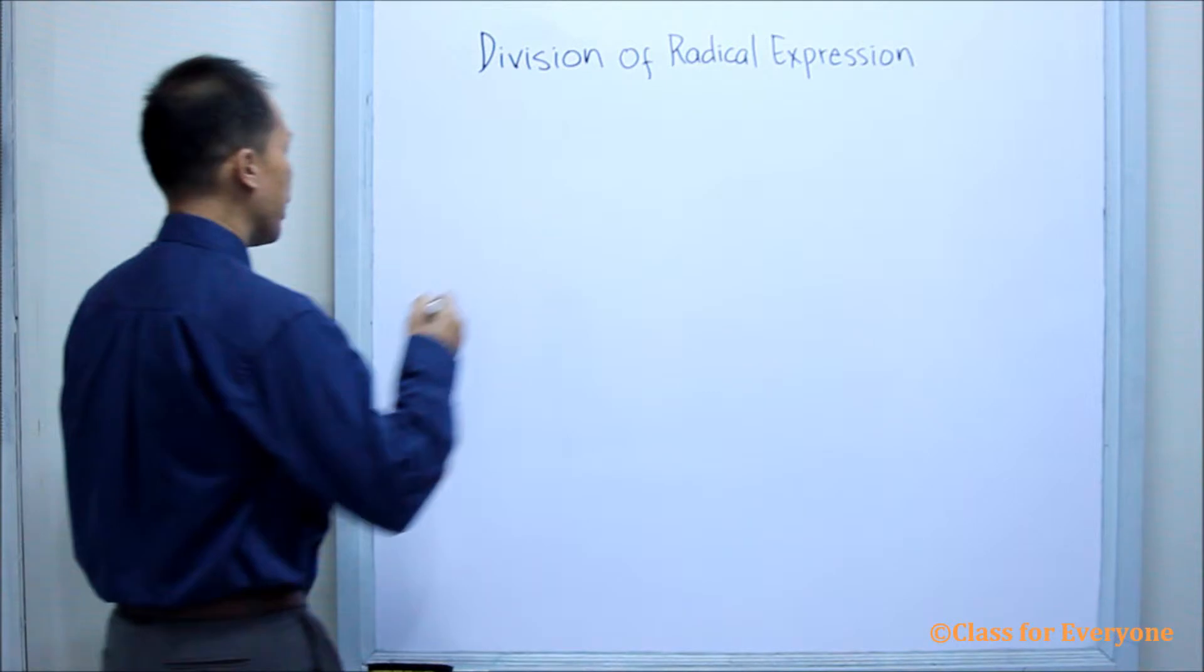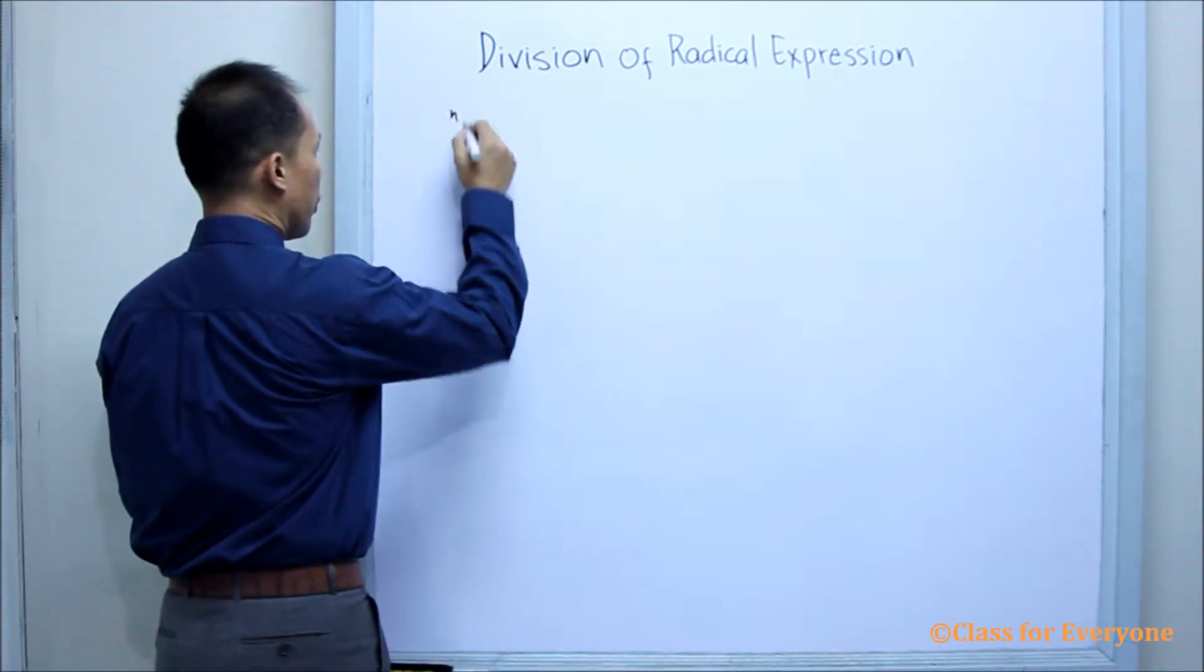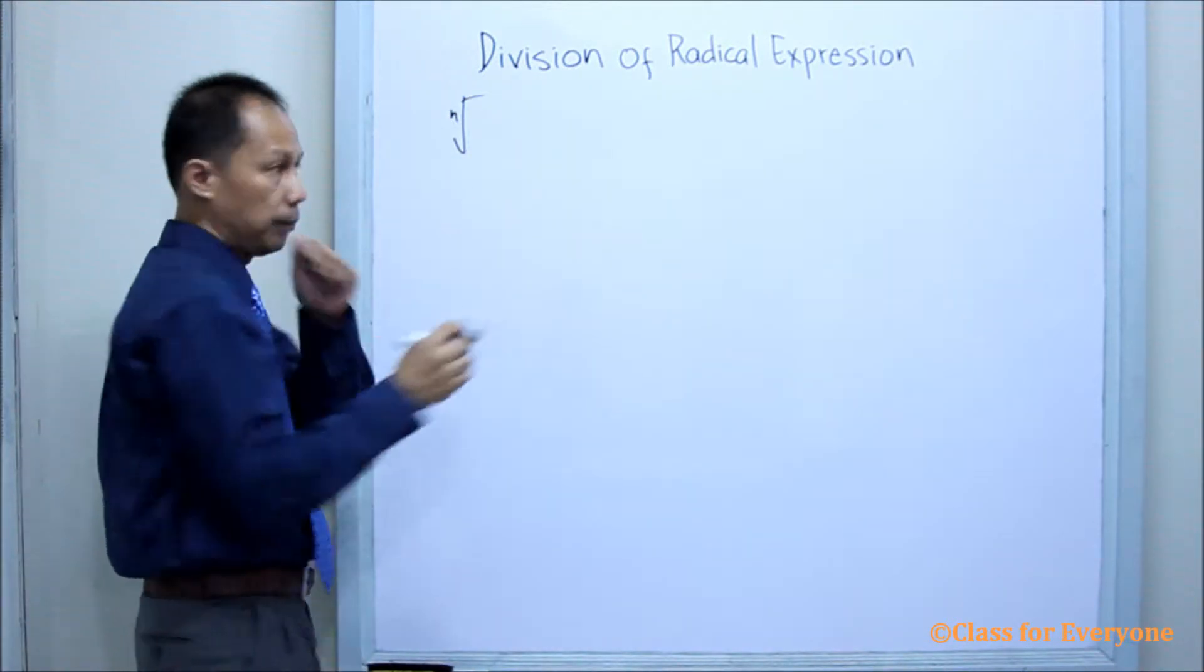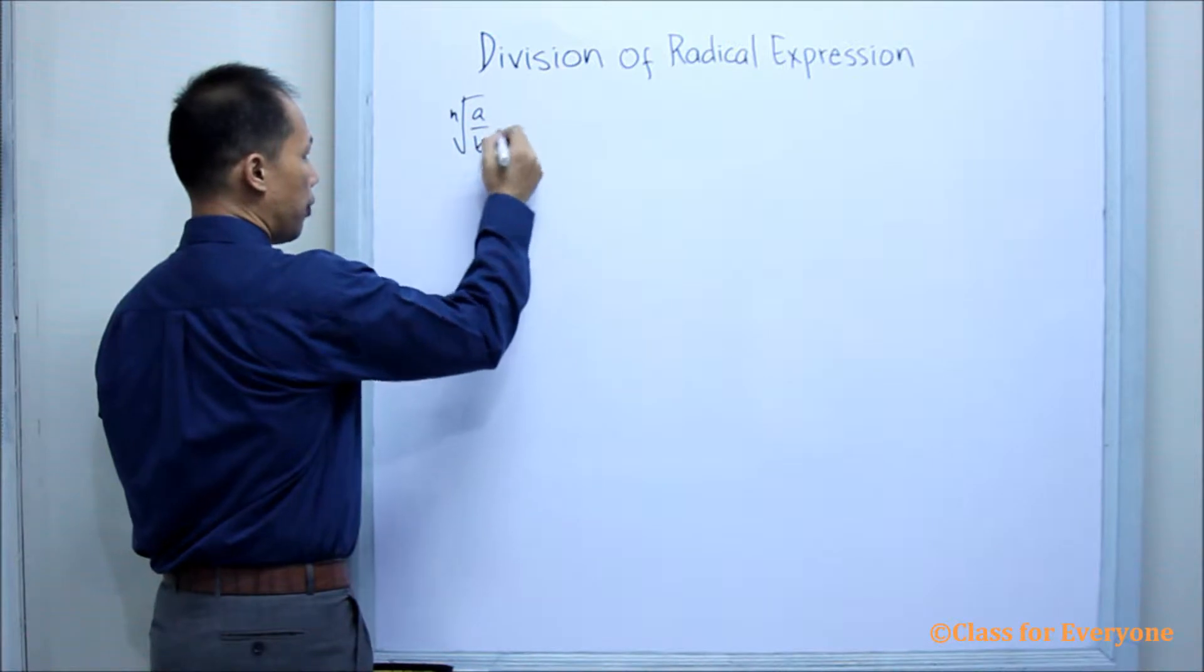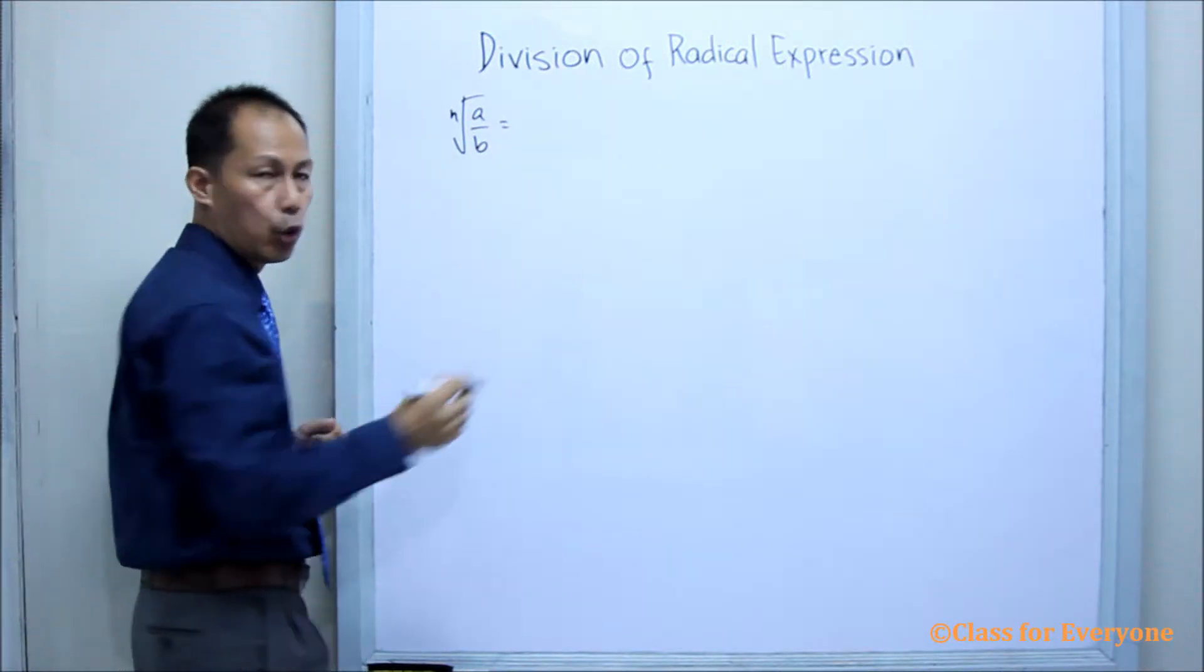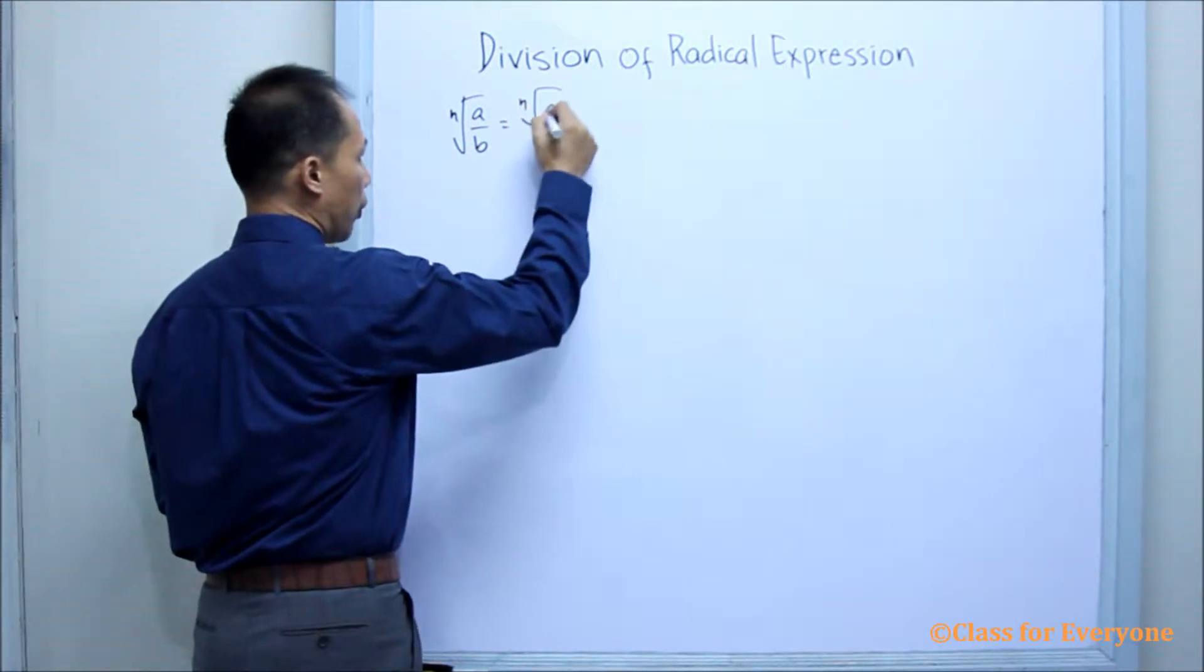it is written as the nth root of a over b is equal to the nth root of a over the nth root of b.